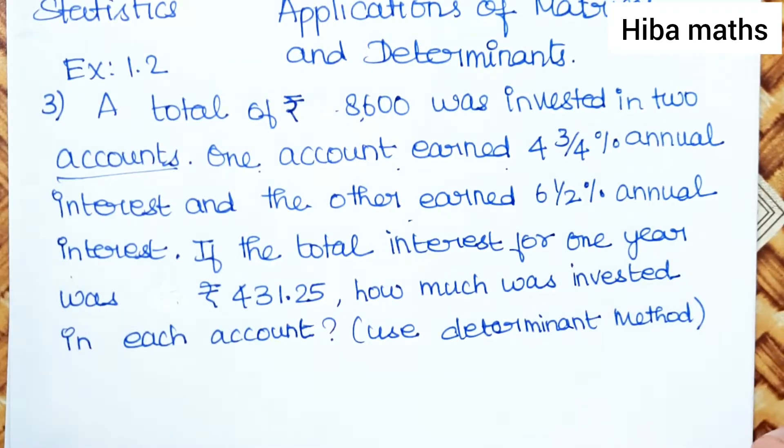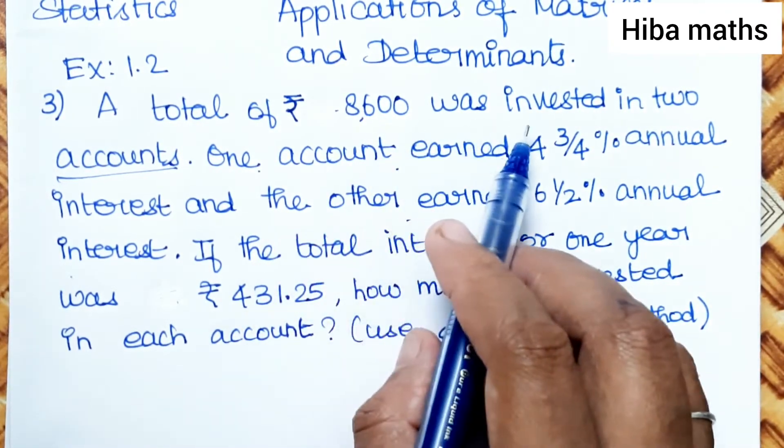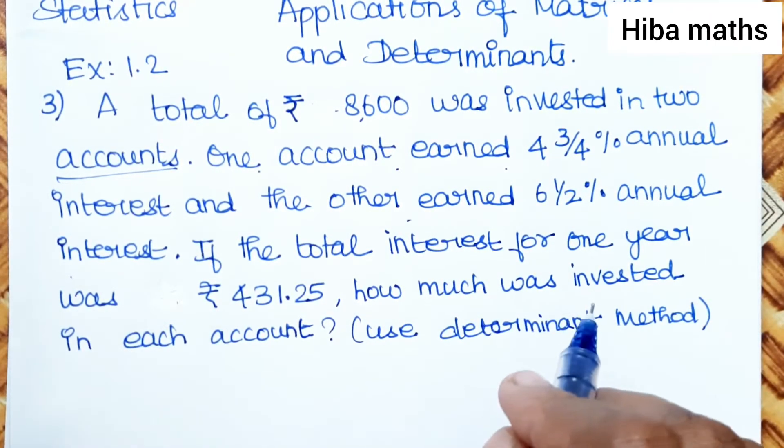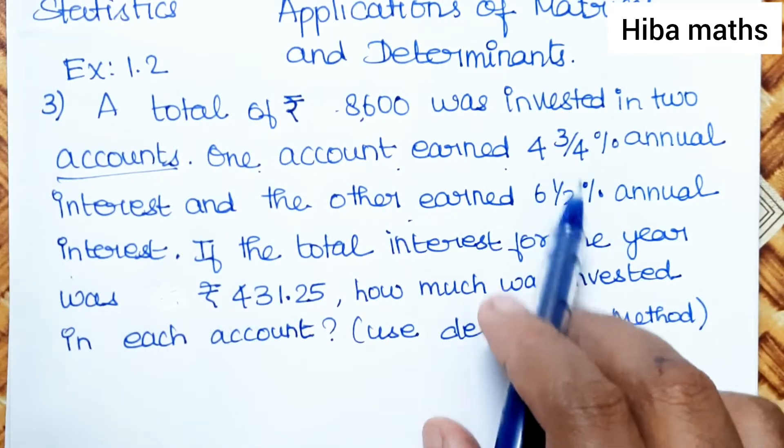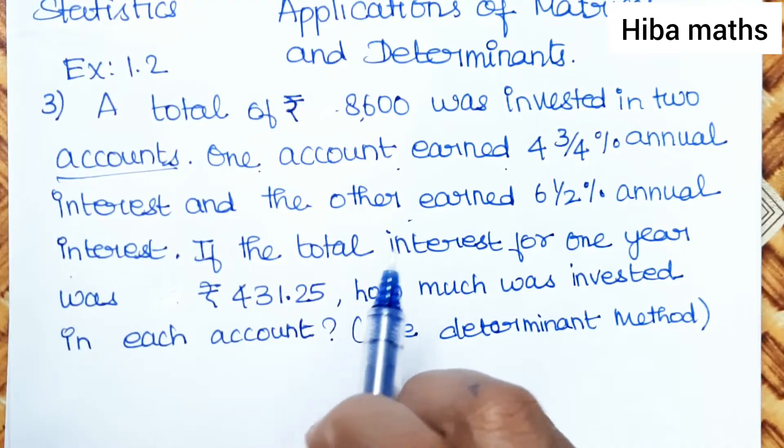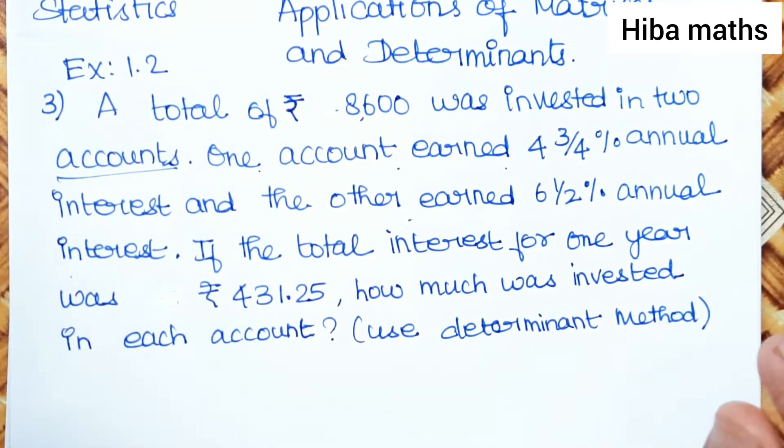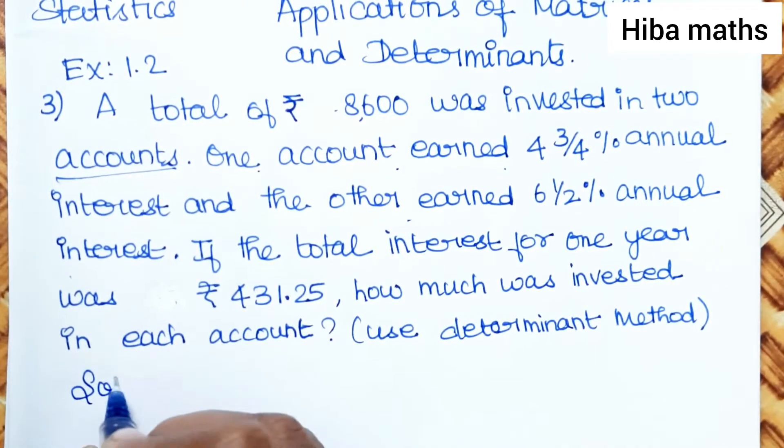So determinant method means we will use Cramer's rule. The total of 8,600 is in two accounts - one is X and the other is Y. So X plus Y equals 8,600. The individual percentages added together equals 431.25. Using these two equations, we will apply Cramer's rule to find the solution.